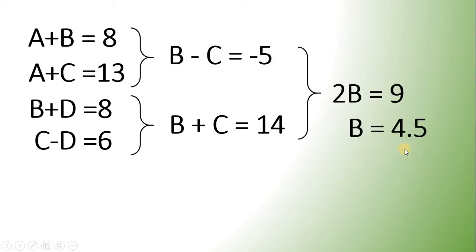Now, since we have the value of B, we can now find the value of A. Because A plus B will give us 8. It follows that A must be 3.5. Because 3.5 plus 4.5 will give us 8.